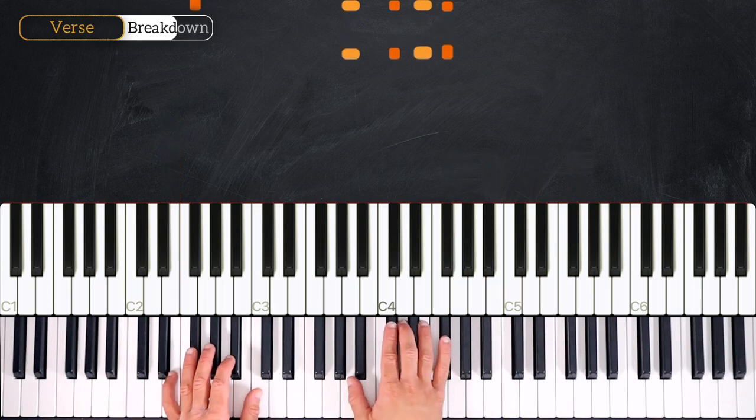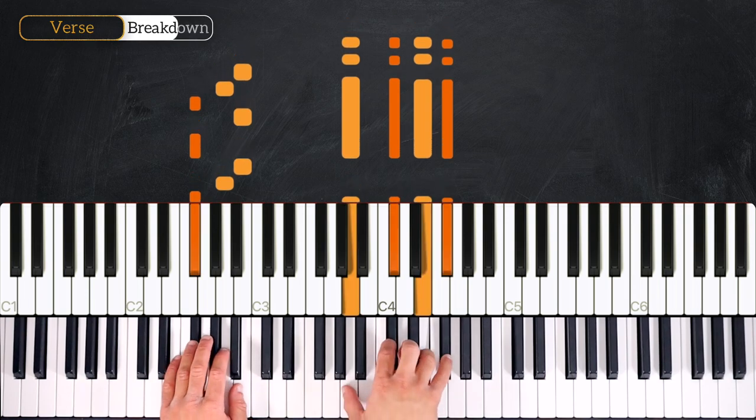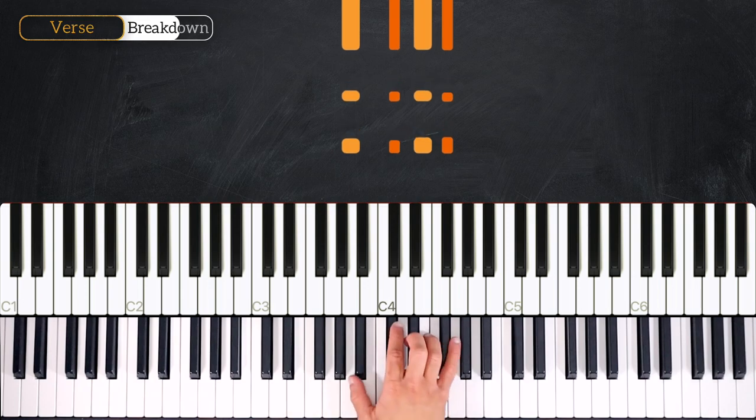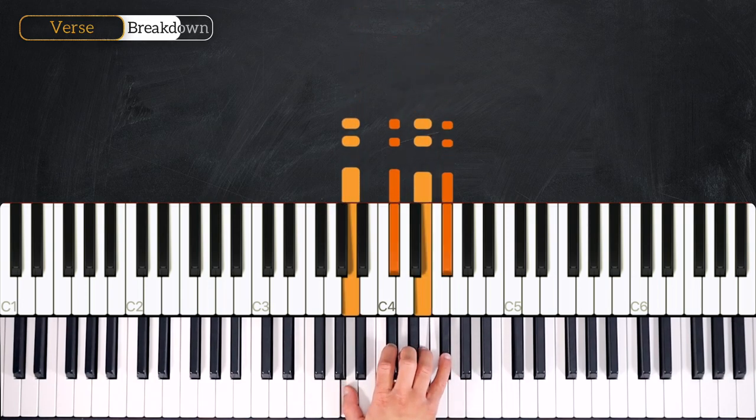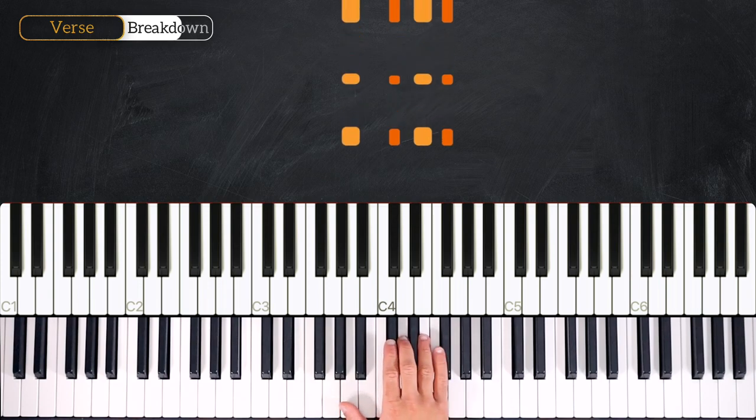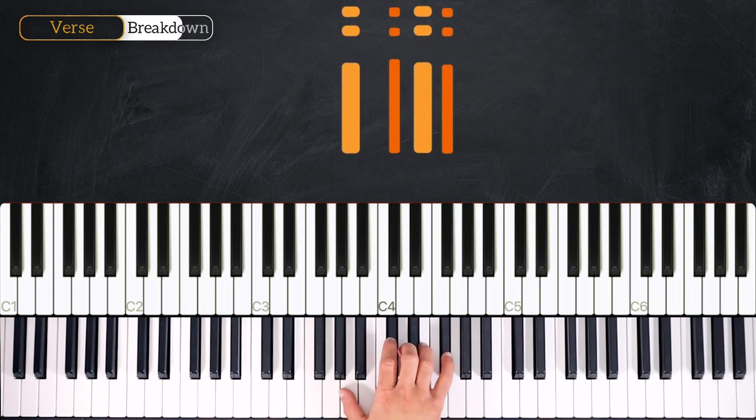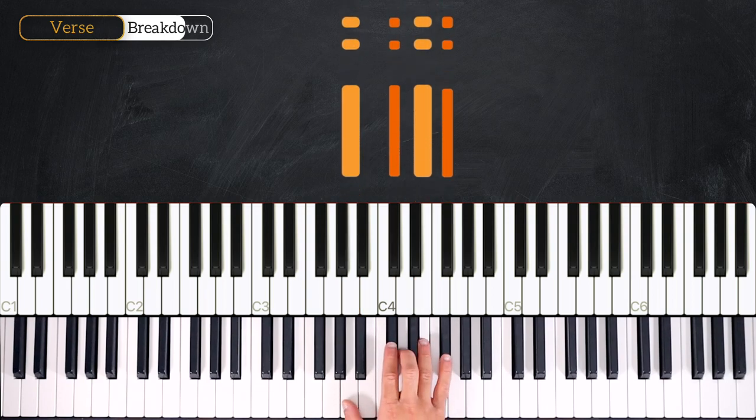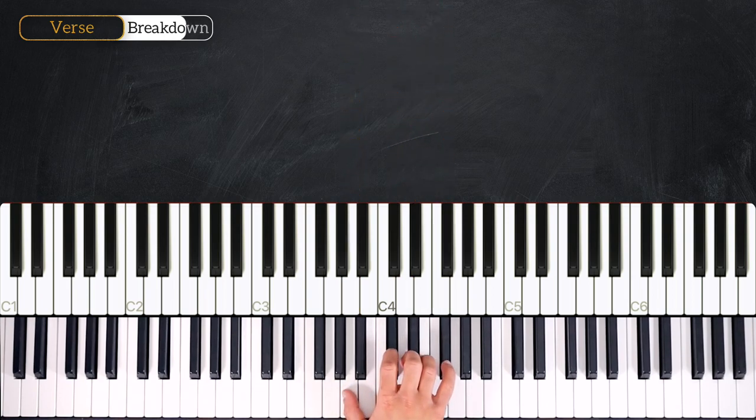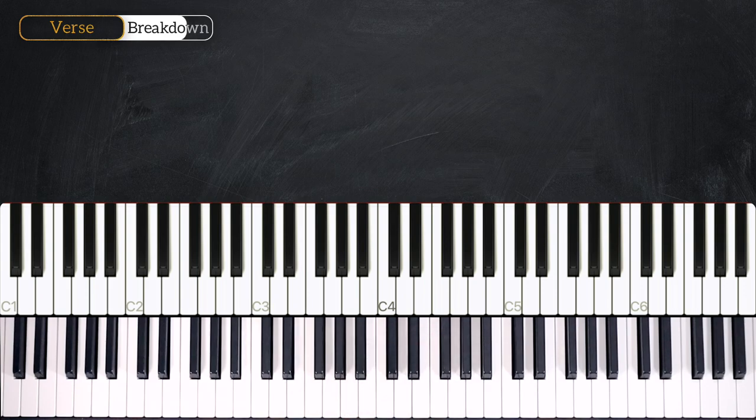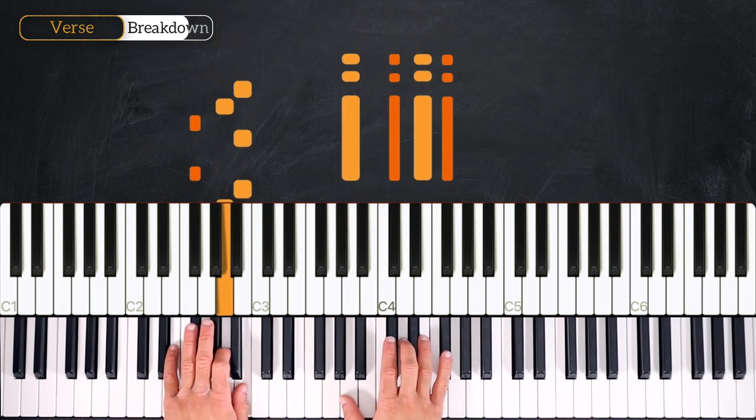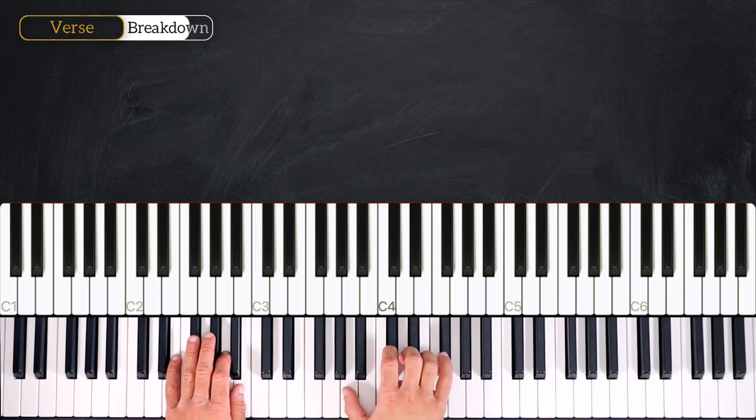Then the right hand is going to play this F sharp minor 7 chord. So let's learn the rhythm. It goes one, two, three, four. Again. One, two, three, four, four. One last time, even slower. One, two, three, and four. Very good. So hands together. Three, four, four. Very nice.